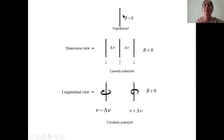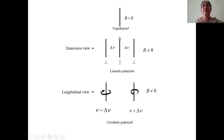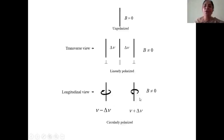To summarize: in the absence of magnetic field, a single unpolarized spectral line was observed. When a strong magnetic field was applied and the spectrum was viewed in transverse view, the single line split into three linearly polarized lines — the middle line polarized parallel to the magnetic field and the outer lines polarized perpendicular. In longitudinal view, the middle line was missing and the two outer lines were circularly polarized, one anti-clockwise and one clockwise.